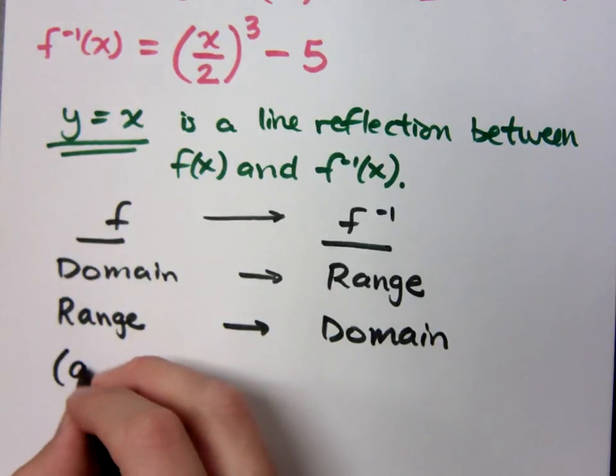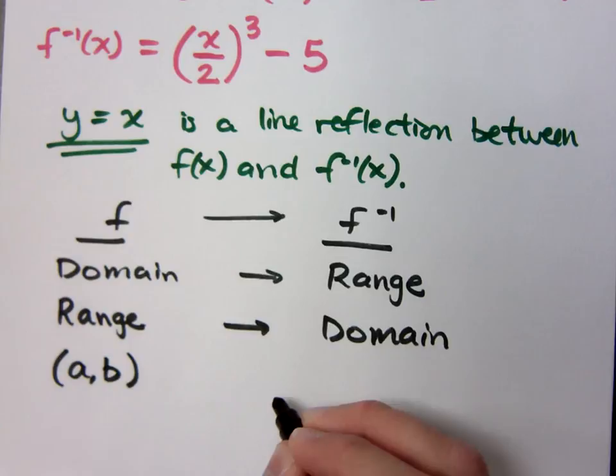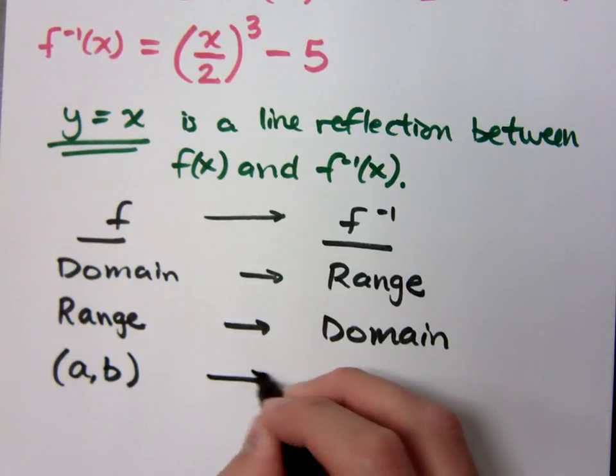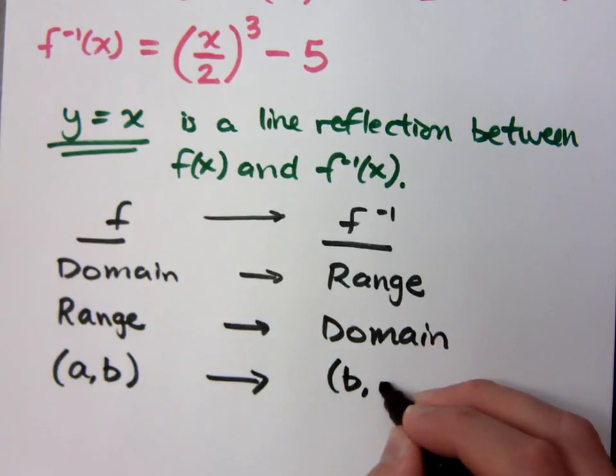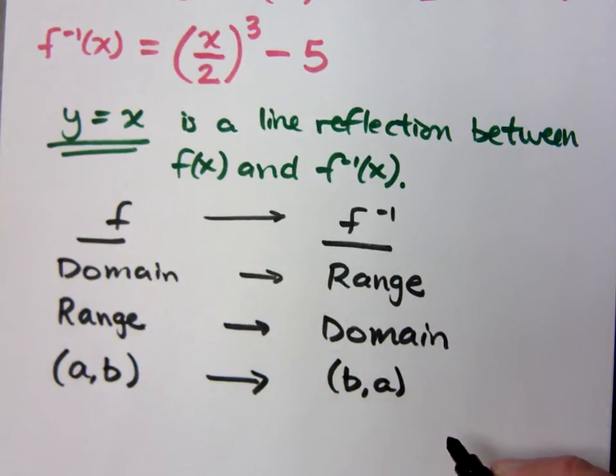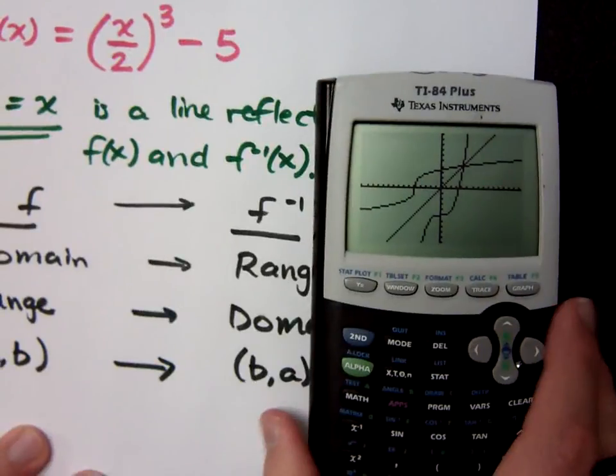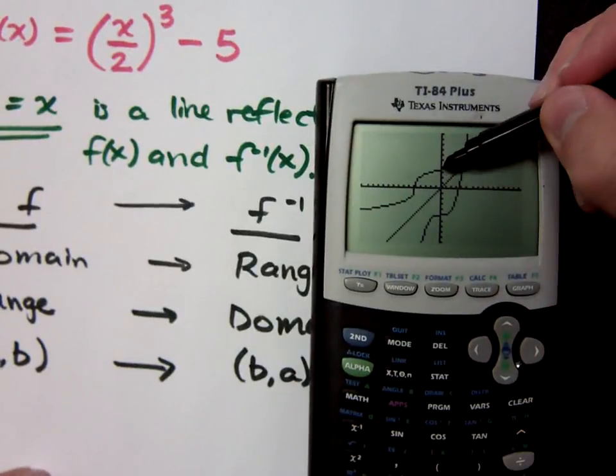And if you have a point a comma b on f, guess what you're going to have on f inverse? It's going to be b comma a. So if you've been working your homework, you probably would have seen that come up. And it's really not that difficult. You can see here, you've got this order pair right here.